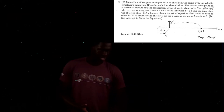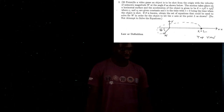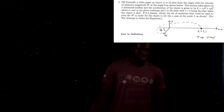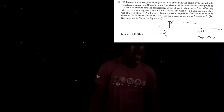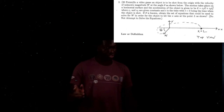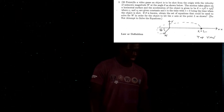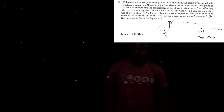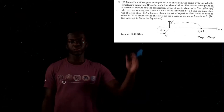Now we're going to be doing number 2 for the 2019 exam 1. In a video game, an object is to be shot from the origin with a velocity of unknown magnitude w, at the angle theta as shown. The motion takes place on a horizontal surface, and the acceleration is given as c1t in the i direction and c2t in the j direction, where c1 and c2 are given constants. If theta is known, obtain the set of equations to solve for w so the object hits the x-axis at the point L. This is two-dimensional motion.